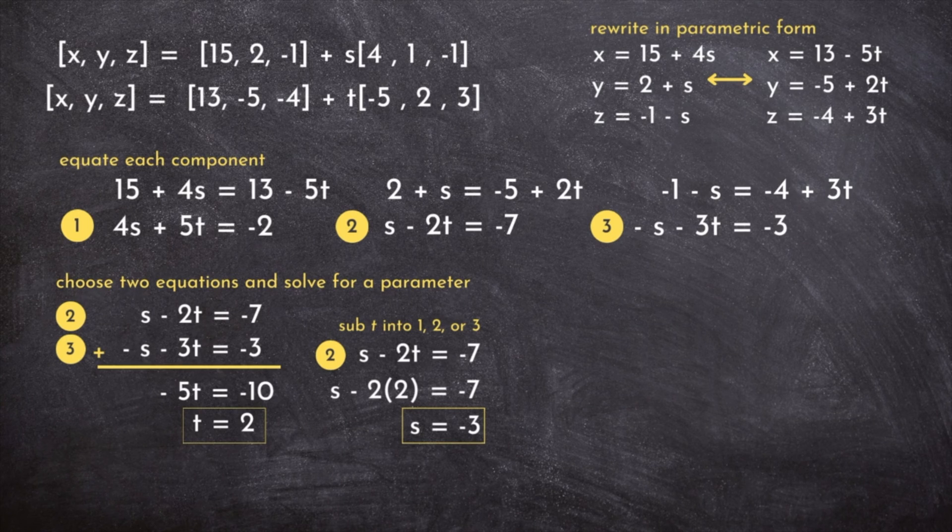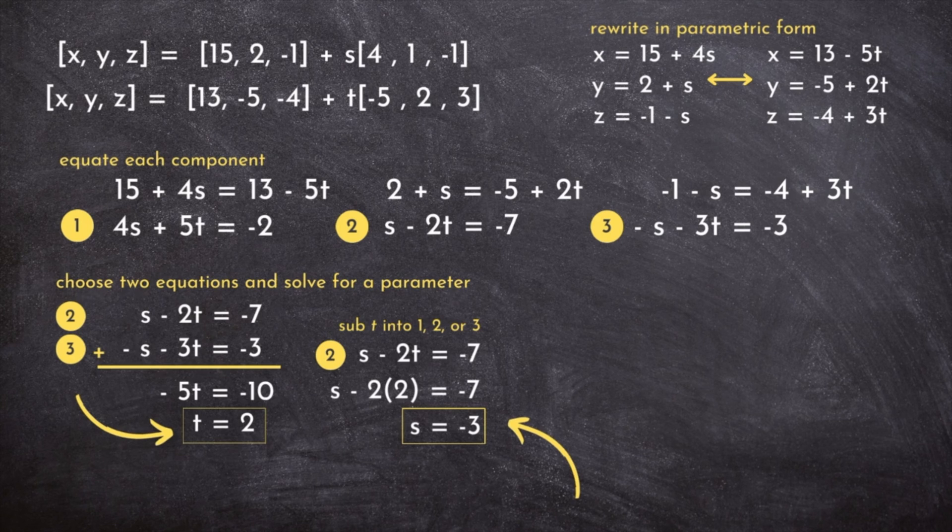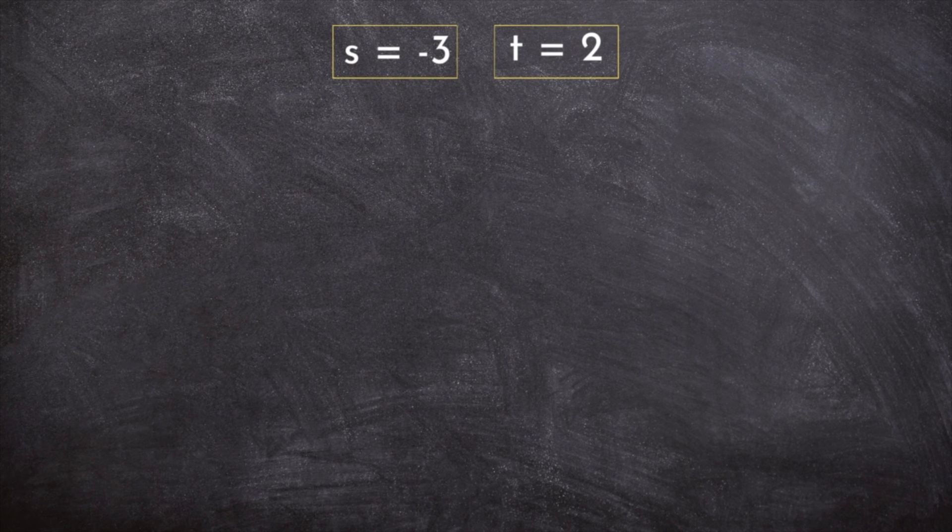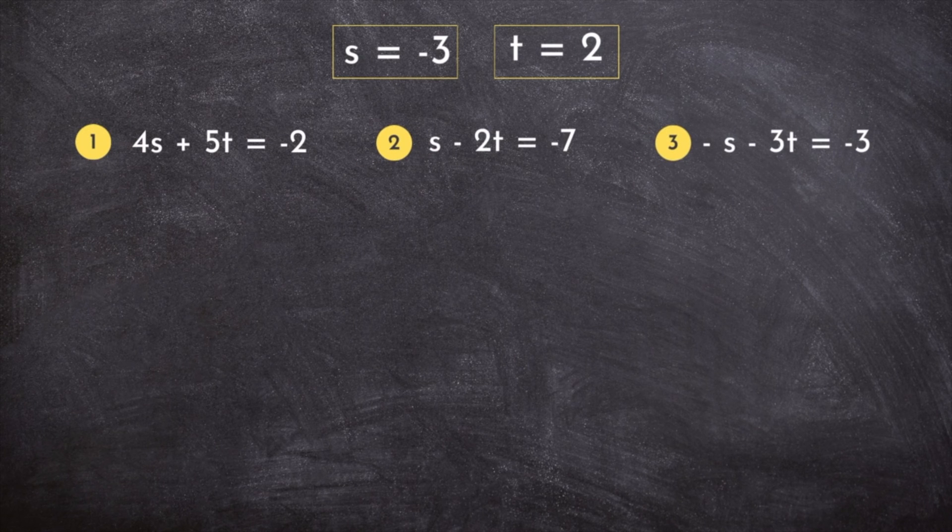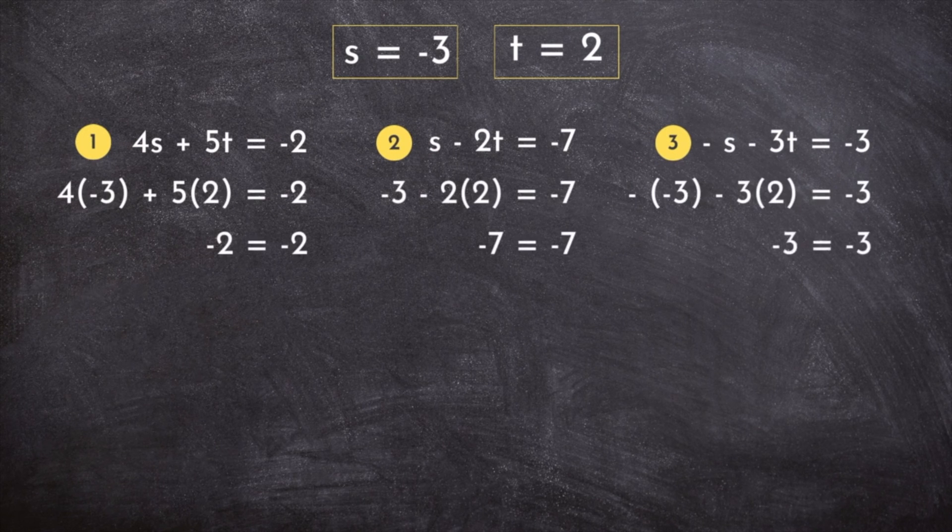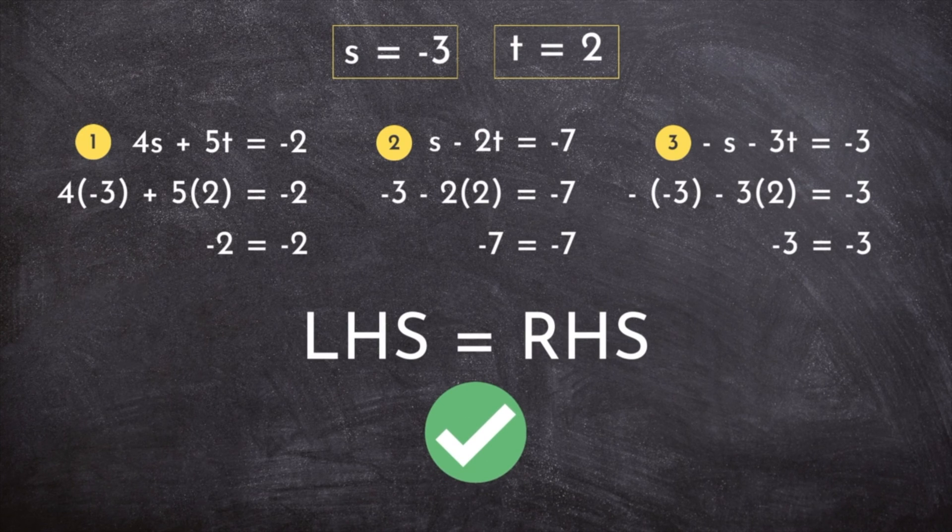Now, in case there was any doubt that these are the s and t that give us equal x, y, z values, substitute s and t into equations 1, 2, and 3. In each case, you'll see that the left-hand side equals the right-hand side. If this didn't happen, you wouldn't have a point of intersection.